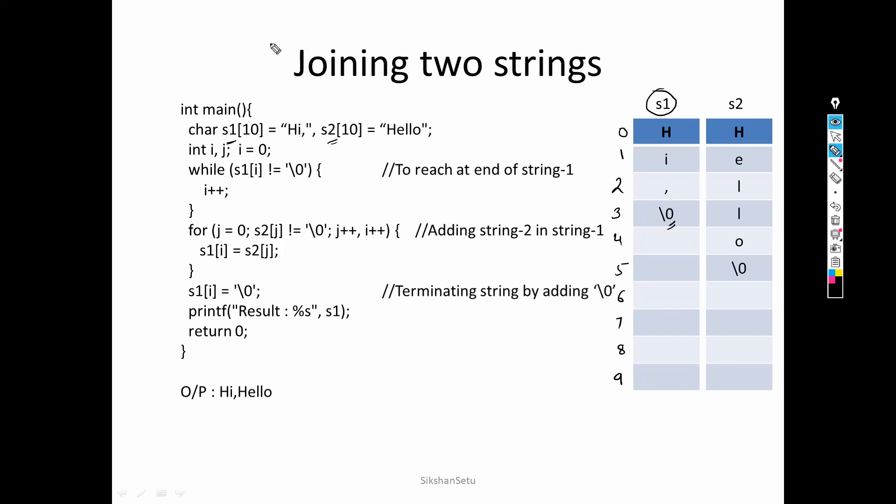Our main target is joining the two strings — meaning the value of s2 will be added into s1. The second question is: where will it be added? It will be added after the contents of s1 get over. In this case s1 contains "hi,", so once that content ends, the contents of s2 will be appended into s1. To do this, we first need to traverse s1 and reach the end of it.